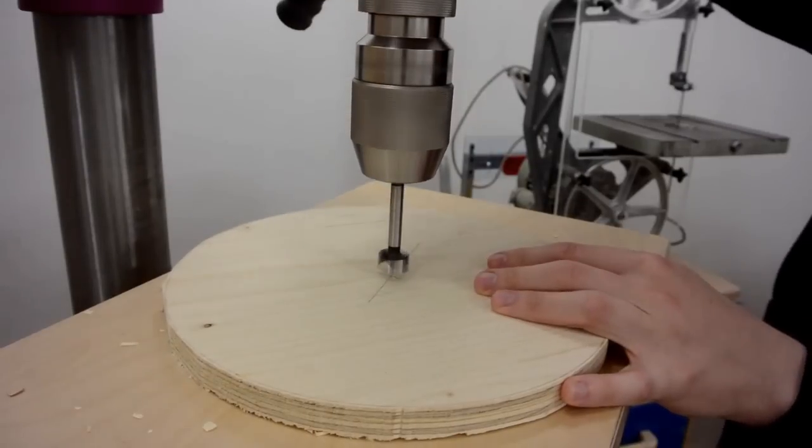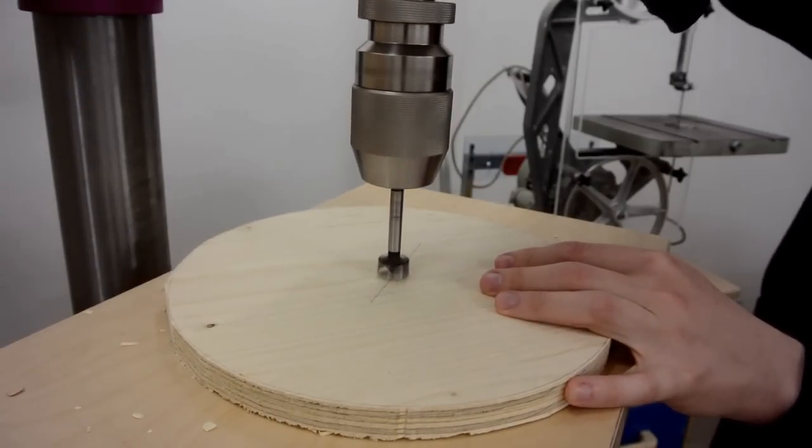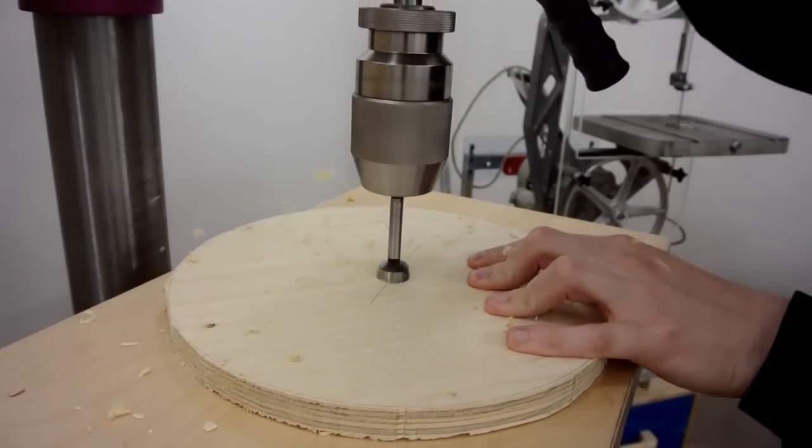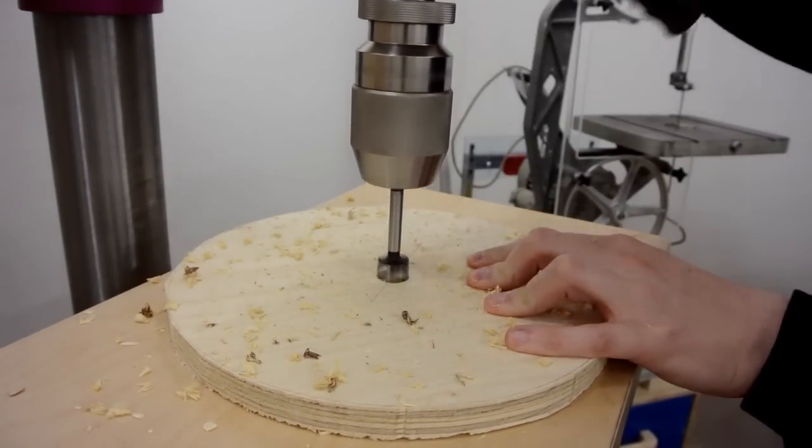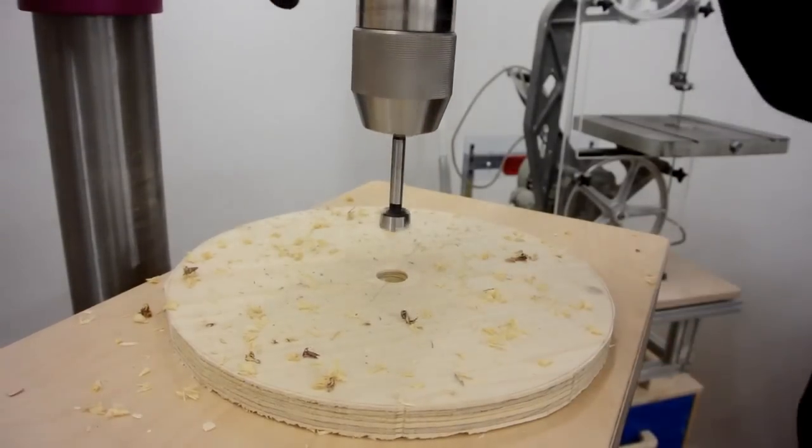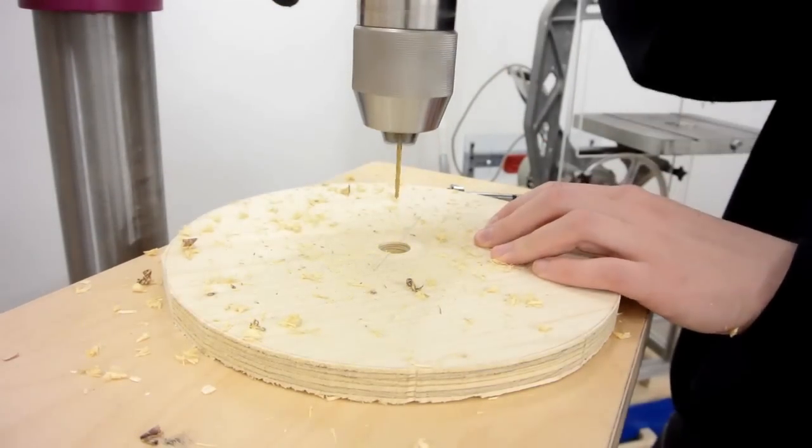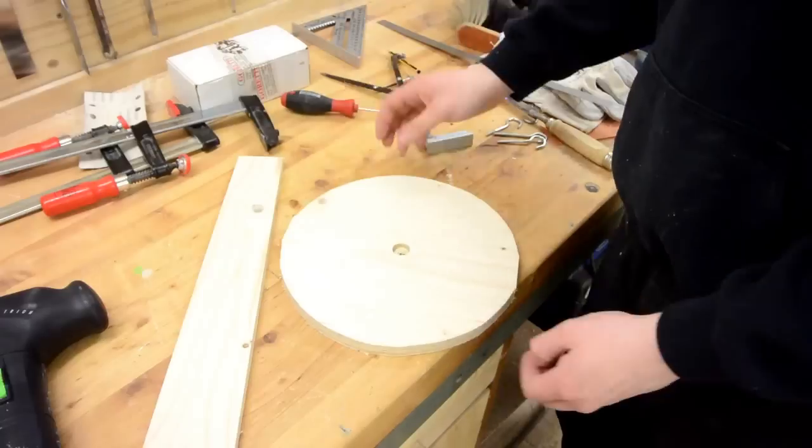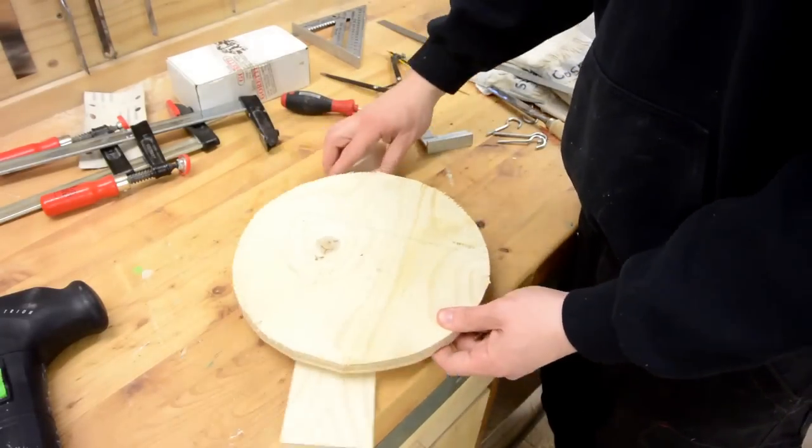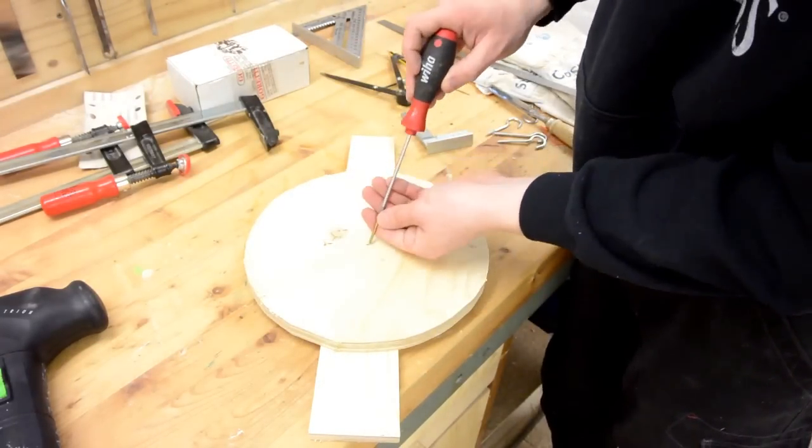Next I drilled a hole partially through the middle, and then a smaller one all the way through. Drilling the bigger hole partially through allows me to continue drilling at the right spot despite the exact center has been removed by the small drill bit.